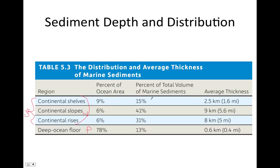Neritic sediments are mostly terrigenous, so we have very thickly piled terrigenous sediment on a small portion of the seafloor — the continental margins. And we have very thinly piled biogenous sediment on 78% of the ocean floor. Average sediment thickness: continental shelves 1.6 miles, continental slopes 5.6 miles, and continental rises 5 miles. Pelagic sediments, which are mostly biogenous, are piled very thinly.